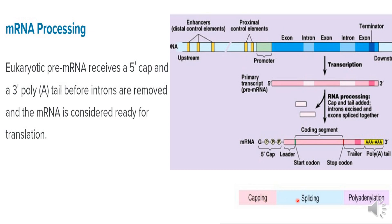The three steps of mRNA processing are: capping, splicing, and polyadenylation (tailing). First, capping occurs at the 5' end of the pre-mRNA. Next, splicing removes non-coding segments (introns), leaving only coding segments. Then tailing adds adenine nucleotides to the 3' end — polyadenylation. After these three processes, the result is mature mRNA that is ready for translation.